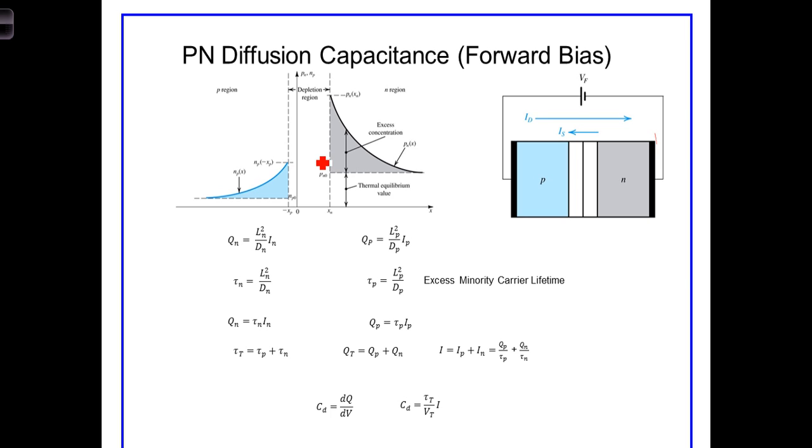The amount of charge on either side of the junction can be calculated with these formulas. This time based upon the electron current, and here based upon the hole current. A time variable tau can be defined, which is known as the excess minority carrier lifetime.